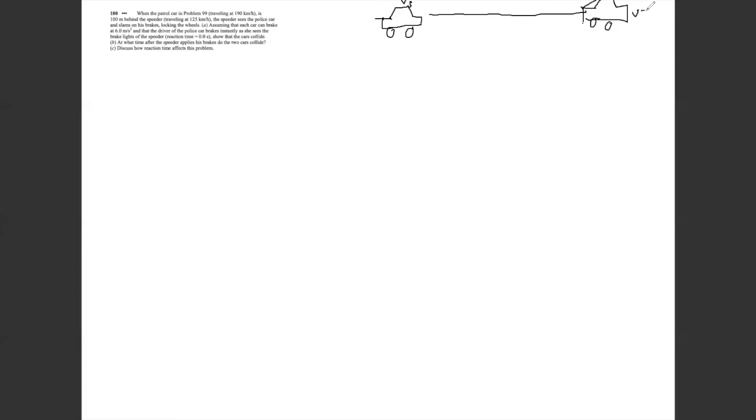And this is speed V equals zero. It had some acceleration as it went that distance. By the way, we should go ahead and choose a direction, call this to the right the positive direction, which means the accelerations are negative. And it's going to cover some distance delta x speeder.